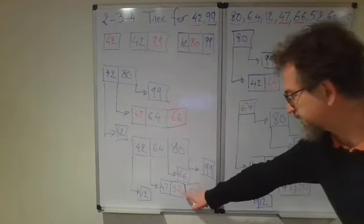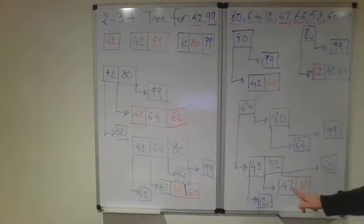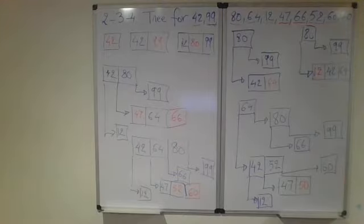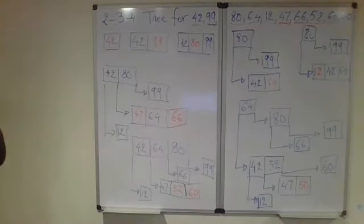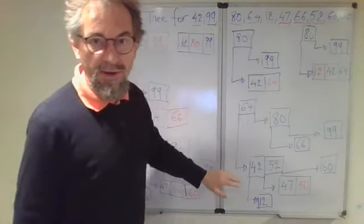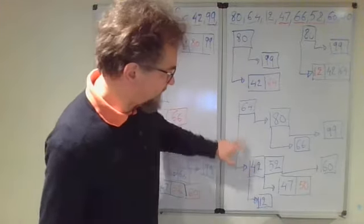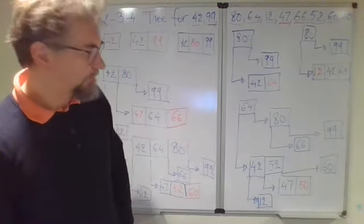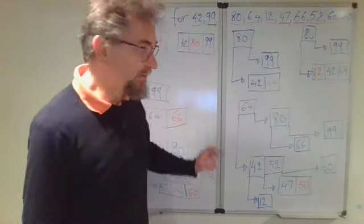Because this got splitted, 52 became the new root, and we have 47 to the left, 60 to the right. So this is the most complicated case. Again, let's verify that we have a search tree. Everything that is at the left is less. Everything that is at the right is larger. Observe also that this is balanced. By the split, we actually introduced one level.